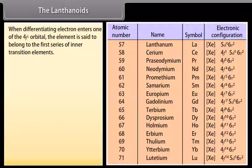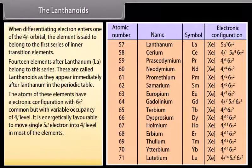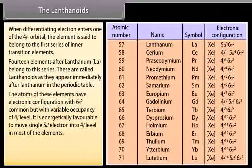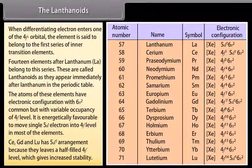The 14 elements after lanthanum are called lanthanoids as they appear immediately after lanthanum in the periodic table. The atoms of these elements have the electronic configuration with 6s² common, but with variable occupancy of the 4F level. It is energetically favorable to move a single electron into the 4F level in most of these elements. Cerium, gadolinium, and lutetium have a 5d¹ arrangement because this leaves a half-filled 4F level, which gives increased stability.